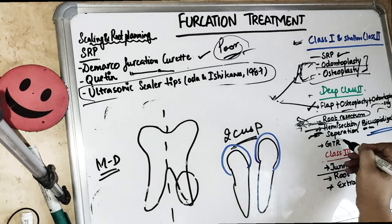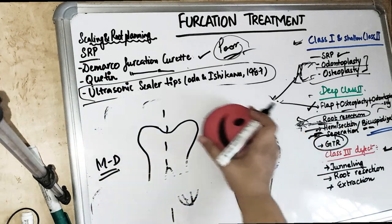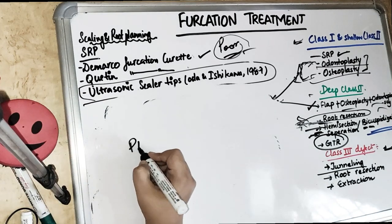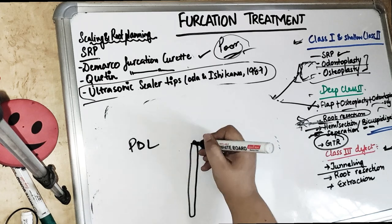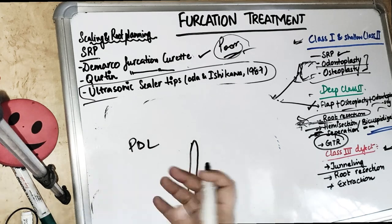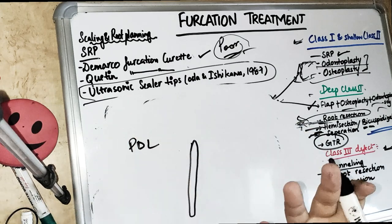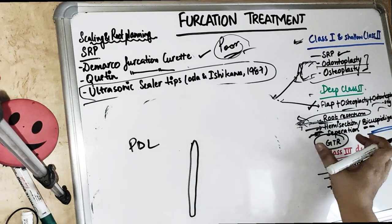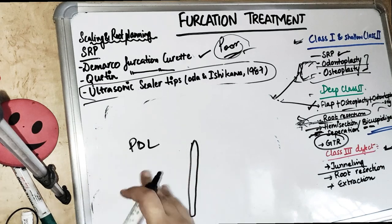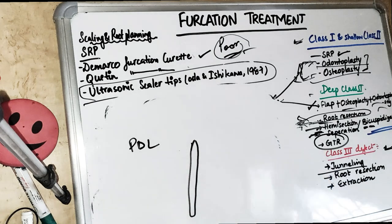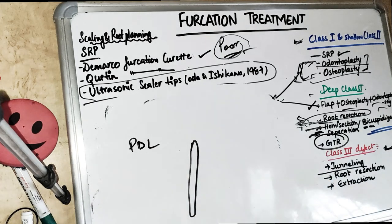We can also do GTR — guided tissue regeneration. We have already covered this: we guide specific tissues, mainly PDL cells, to grow by creating a barrier membrane. This membrane does not let bone, epithelial, or connective tissue meet, only allowing PDL cells to grow, resulting in regeneration of a new connective tissue attachment from PDL cells.